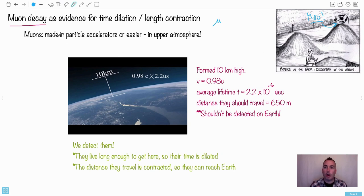Muons are made in particle accelerators, but actually they're also made just in the upper atmosphere naturally. What happens is some cosmic rays will come in and they'll slam into something in the atmosphere here and make this little muon.